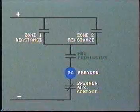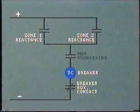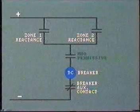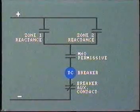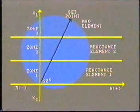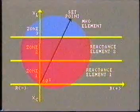But additionally, the Mho element also contains a permissive contact in the operating circuit of the reactance relays. This restricts operation of the reactance relays to this area.